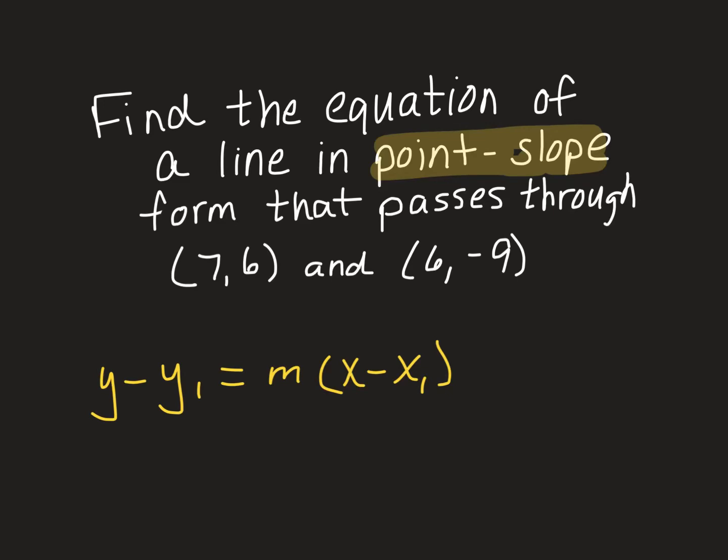Hi, mathematicians. In this video, we're going to add an extra step to writing the equation of a line in point-slope form. As you'll recall from your previous work, the equation for a line in point-slope form is y minus y₁ equals m times x minus x₁.